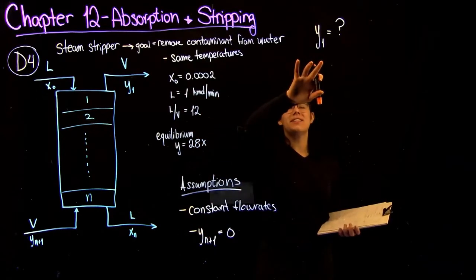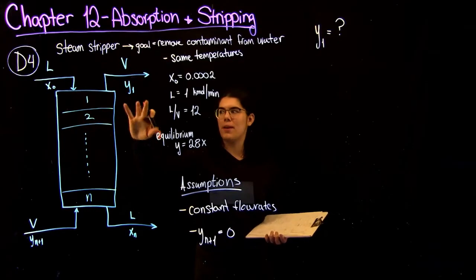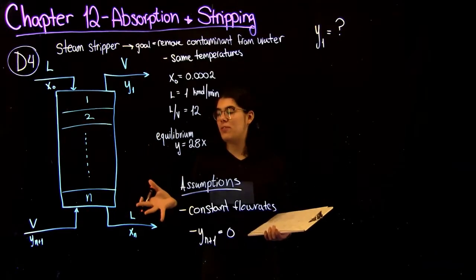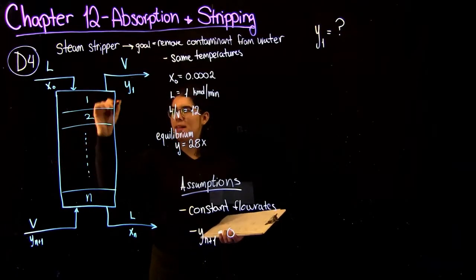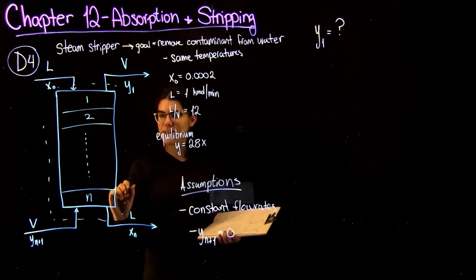So the first question asks us to find the value of y1, and we're going to be able to do this by deriving our operating line for this system. So like we always do, our operating line is just going to be a mass balance. And for this case, we're going to do it just around the entire system.